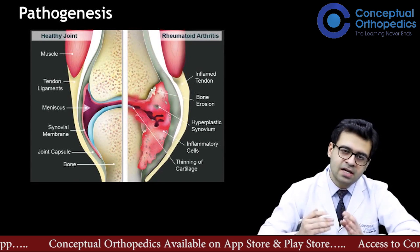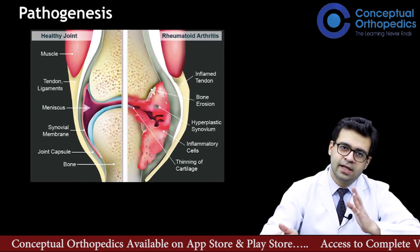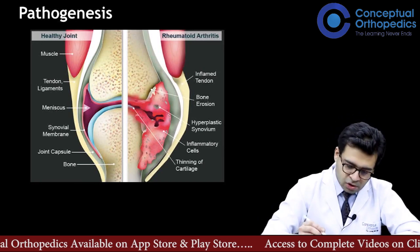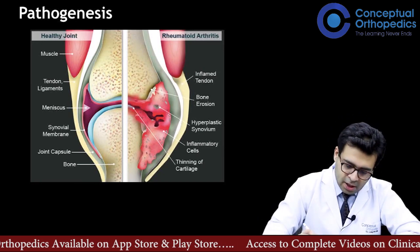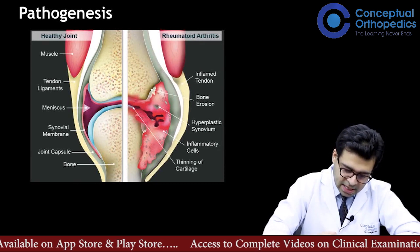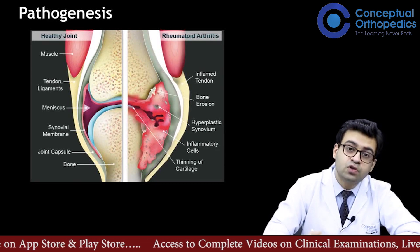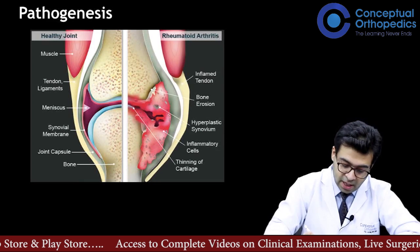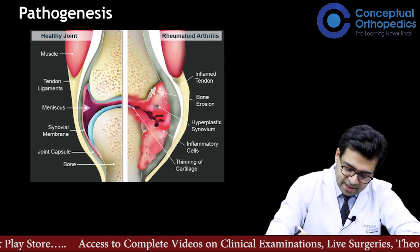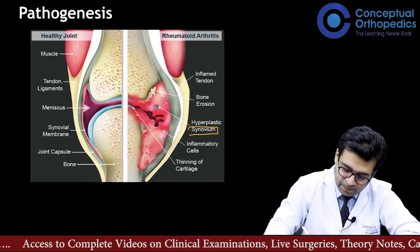Let us see what happens in rheumatoid arthritis. In this image, half shows a healthy joint and half shows an RA-affected joint. The primary, basic pathology occurs in the synovium.